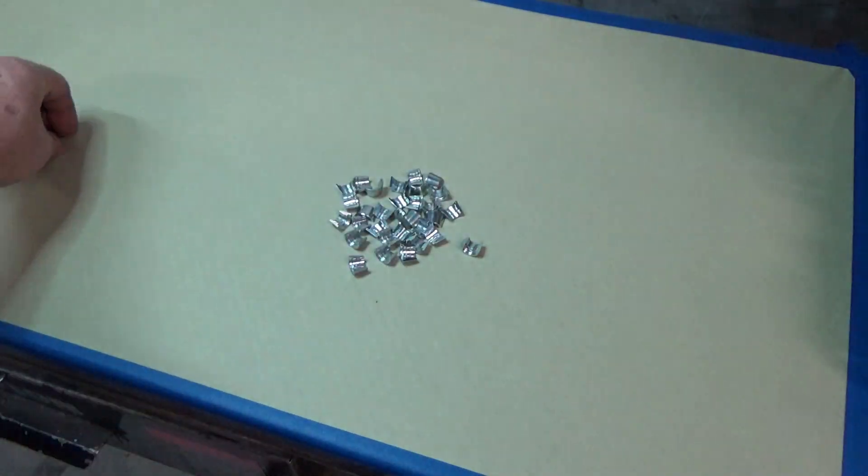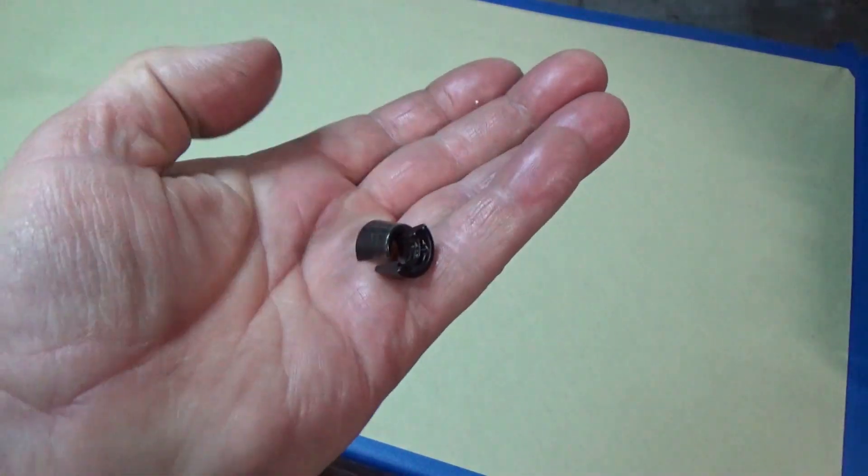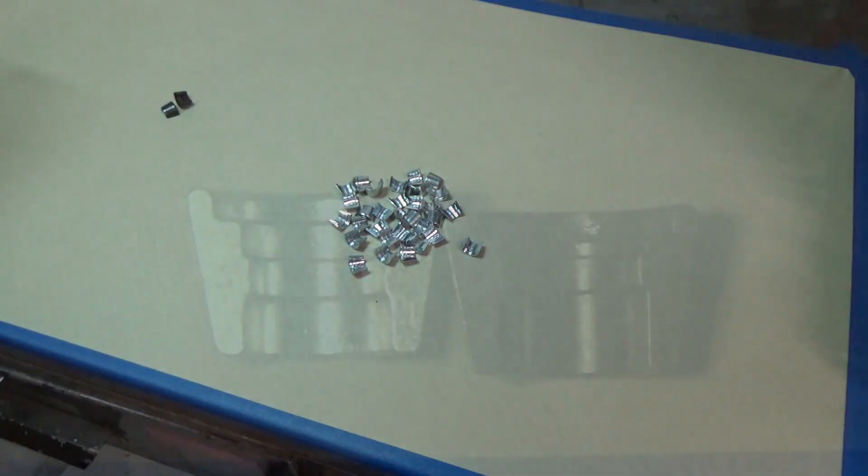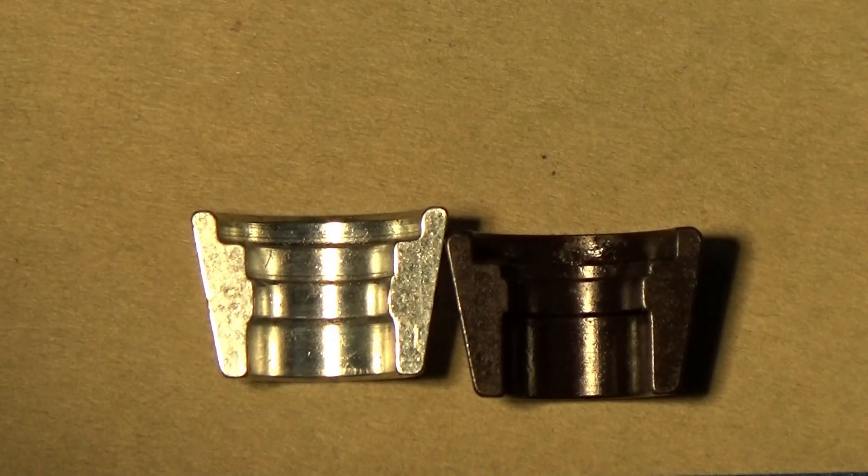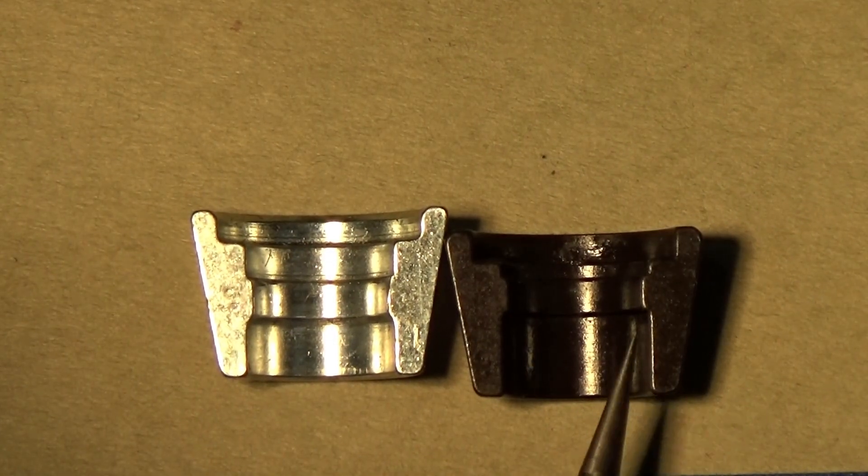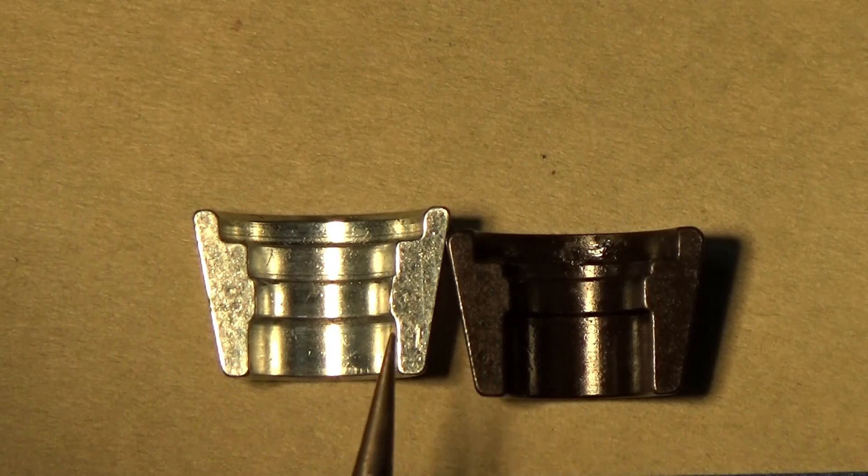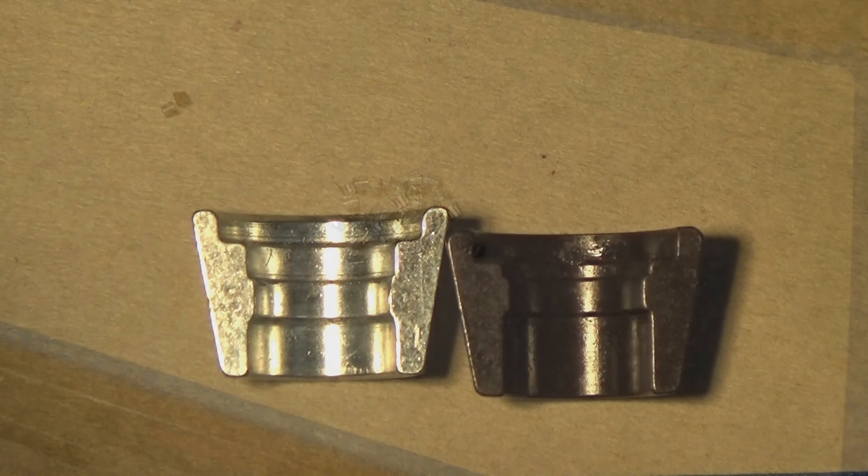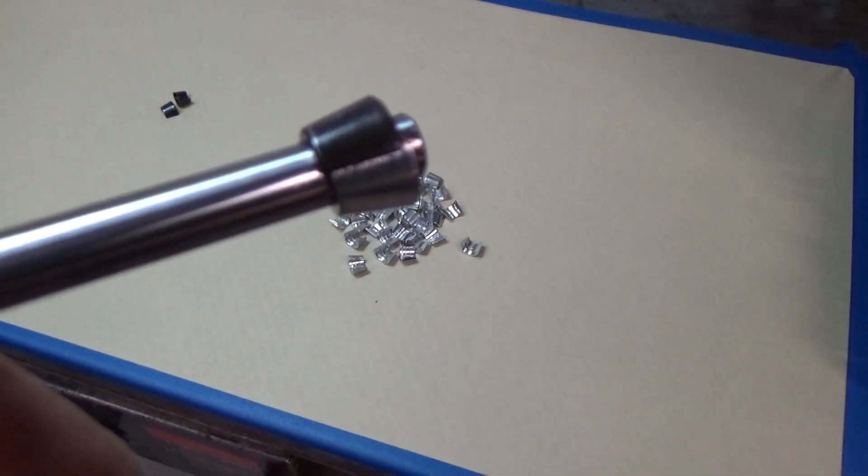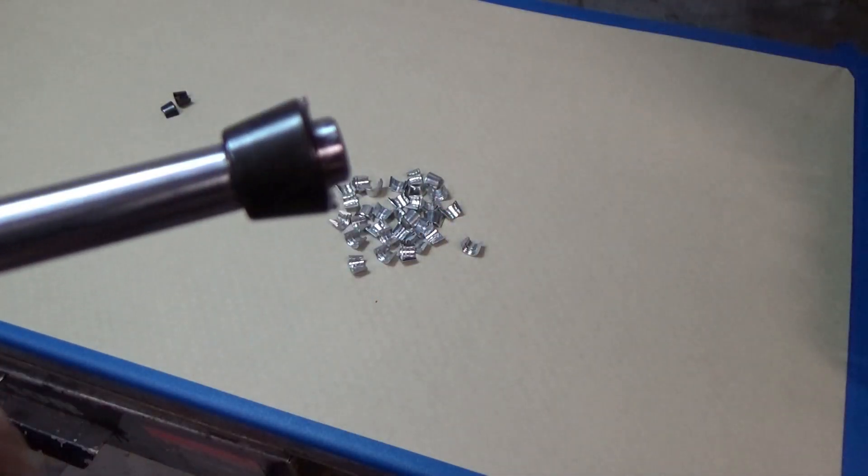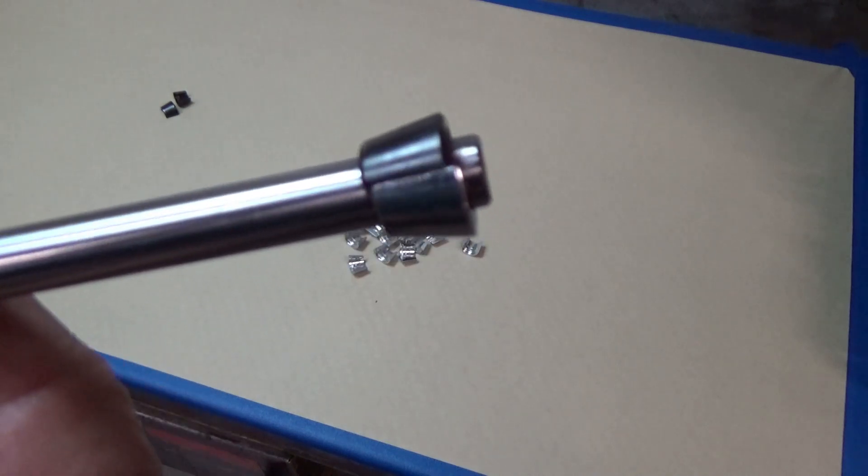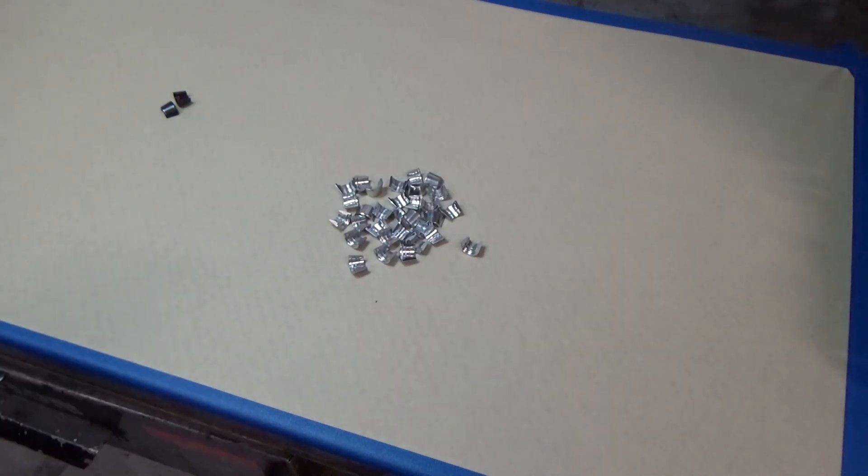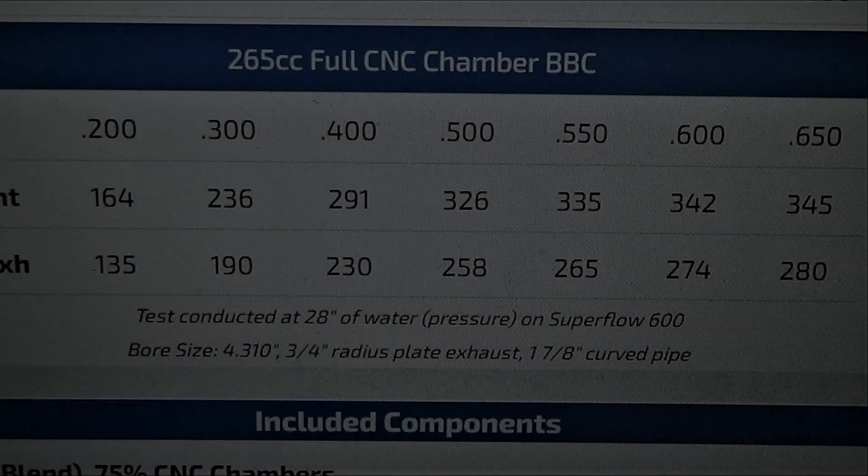What we found was the stock keepers that came with the AFR heads, I needed to buy some keepers that had a 50 thousandths lower keeper height. You can see there the stock keeper, the bright one that's from AFR, and the one I bought is the black anodized one. You can see how it's pushed it down, holds the spring further down, they have a little bit more seat pressure and open pressure. That put us right in the ballpark where we needed to be.